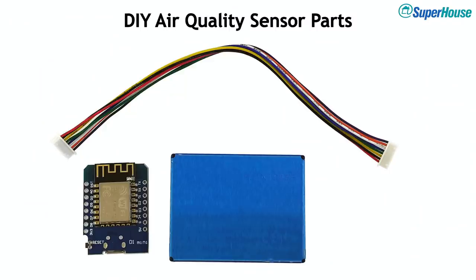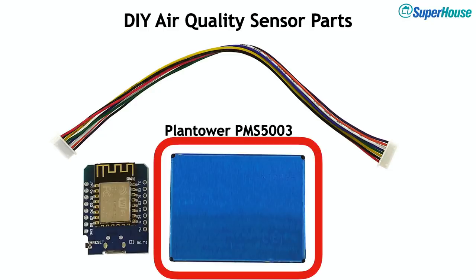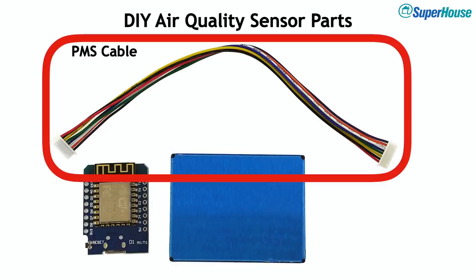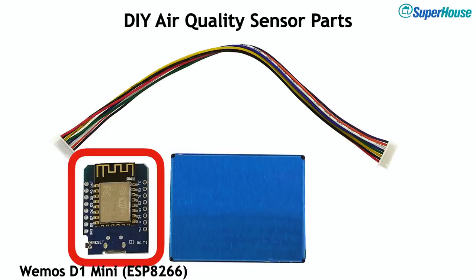For the display version of the air quality sensor we're going to need to start with the same parts as last time. We need the Plantower PMS5003 particulate matter sensor and the cable that it came with, and we also need a Wemos D1 Mini.